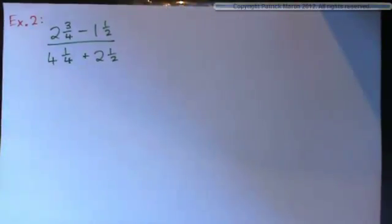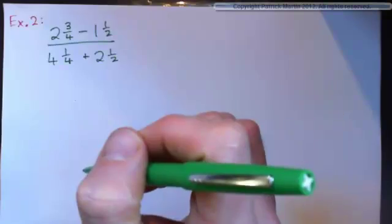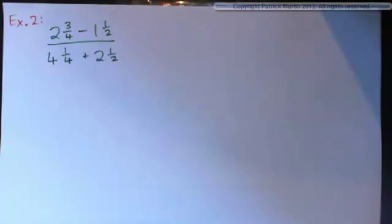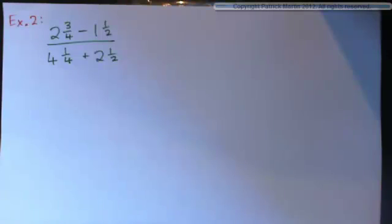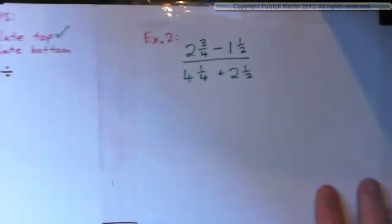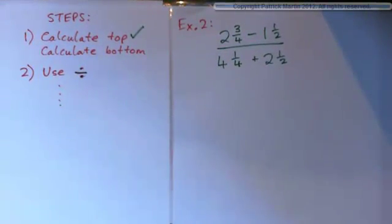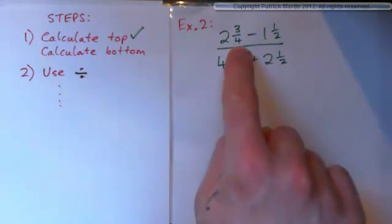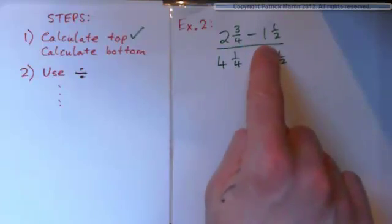Example 2: we have 2 and 3 quarters minus 1 and 1 half on the top, over 4 and 1 quarter plus 2 and 1 half on the bottom. Press pause and try it yourself. The steps are the same as before: first calculate the top, then calculate the bottom, and then use the divide-by sign for the middle fraction bar.